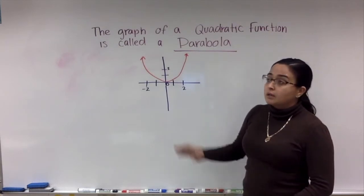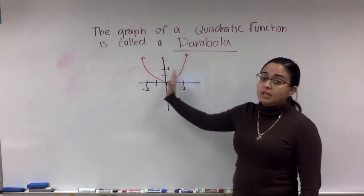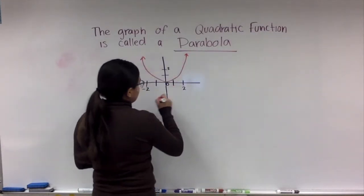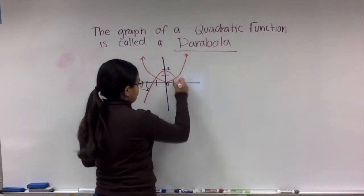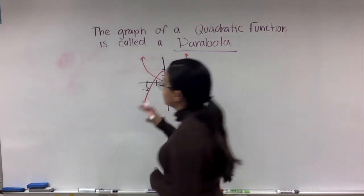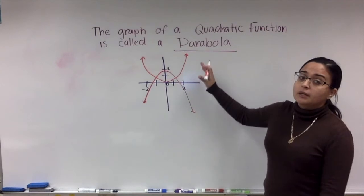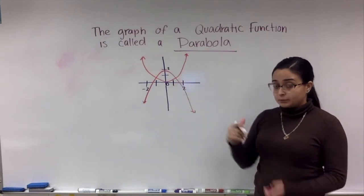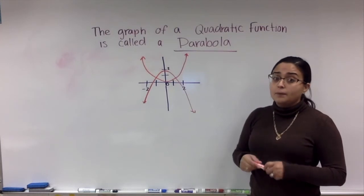The parabola is pretty much a graph where the line is actually a U-shaped curve. Now it could be facing up like this, or it could be facing downwards like this. They're both parabolas whether it's facing up or down.